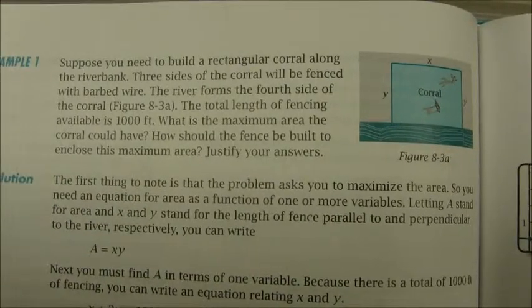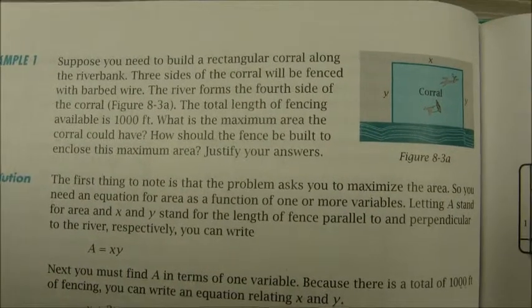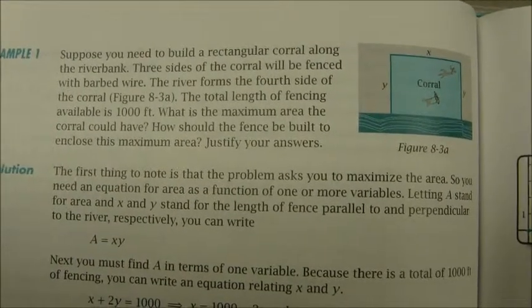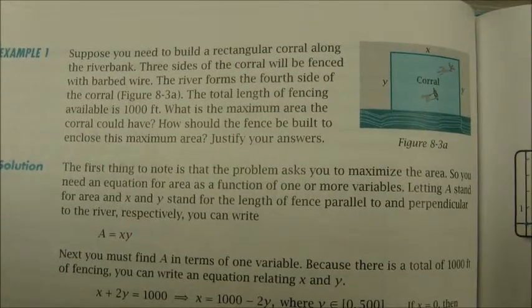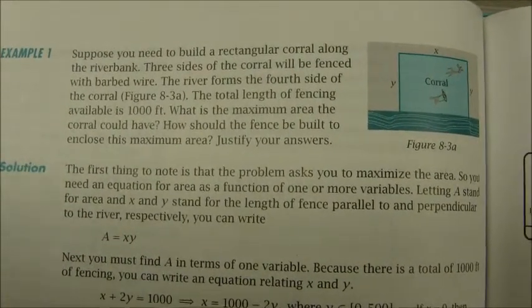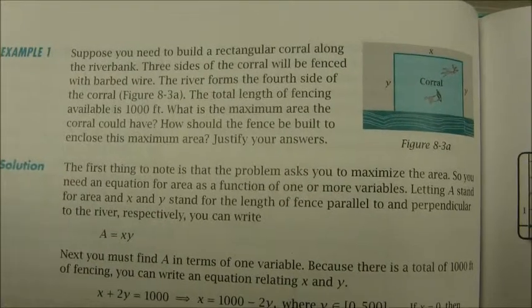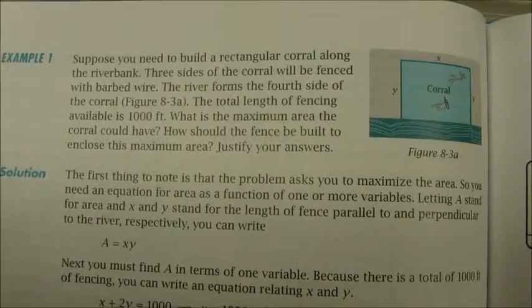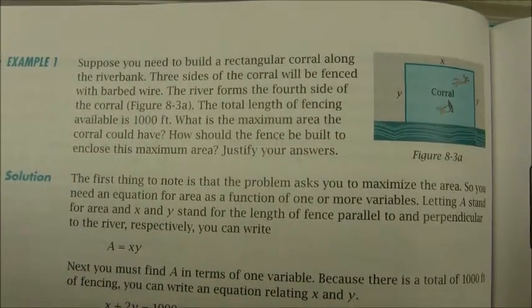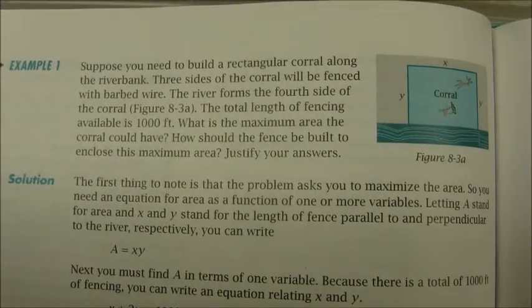Here's my example problem. Suppose you need to build a rectangular corral along a river, which basically means that we're going to need only three sides. We're going to be limited to a thousand feet of fencing and we want to know the maximum area that the corral could have. That's the basic idea of this problem. So let's take a look at how it can be solved.